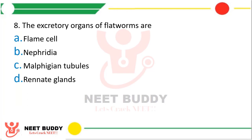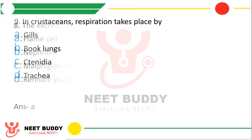Question eighteen: the excretory organ of flatworms are — option A, flame cells; option B, nephridia; option C, Malpighian tubules; or option D, renal glands? The correct answer is option A, flame cells.